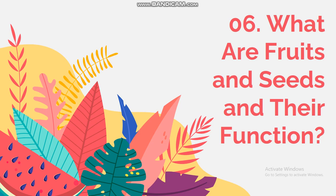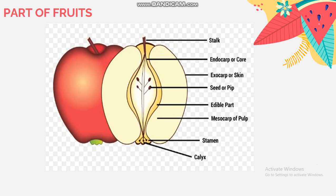Assalamualaikum warahmatullahi wabarakatuh. Today, we're going to learn about what are fruits and seeds and their function. The fruit is a major, ripe female part of the plant that contains the plant's seed. The plants grow from the seeds of the plant.